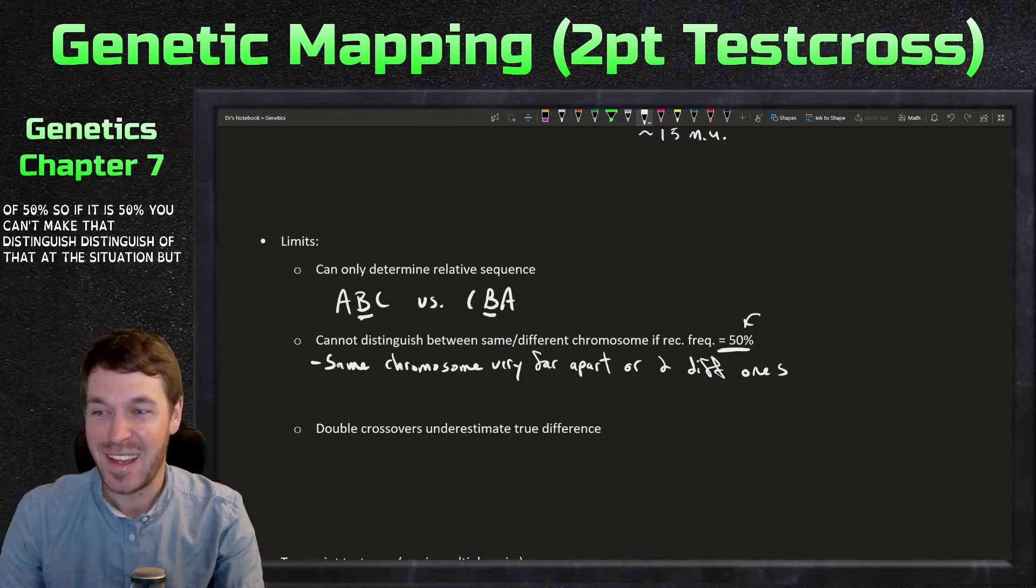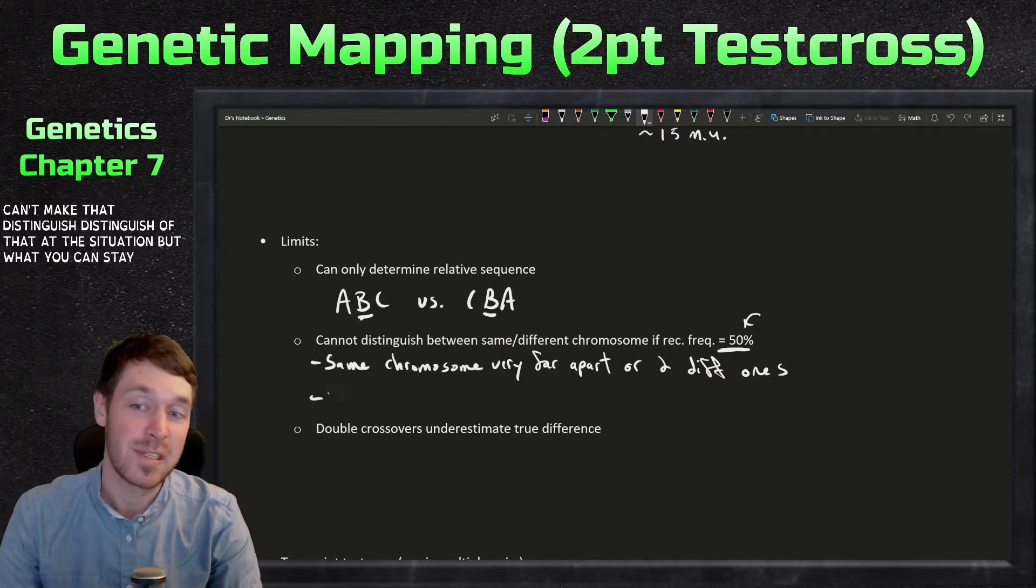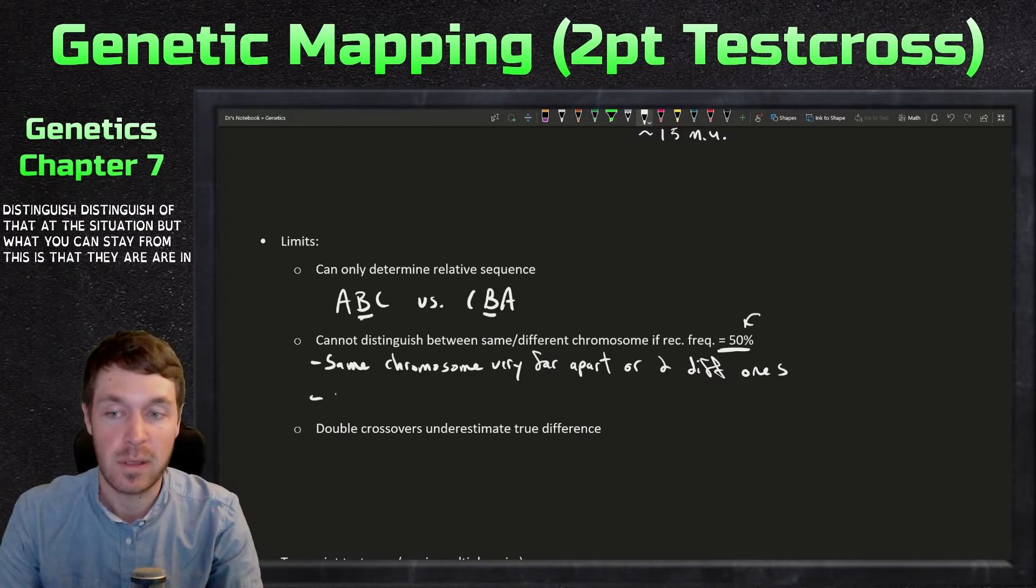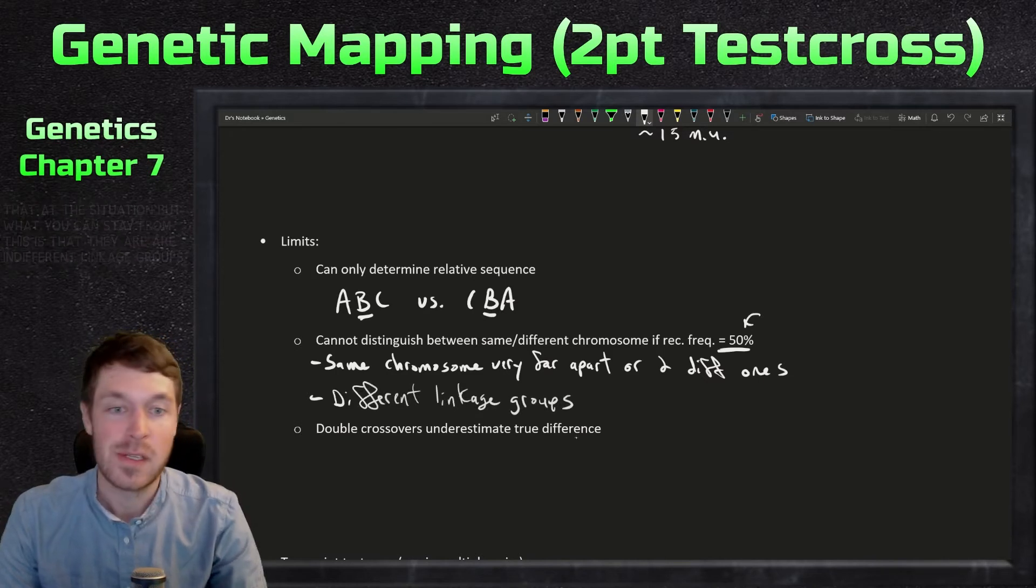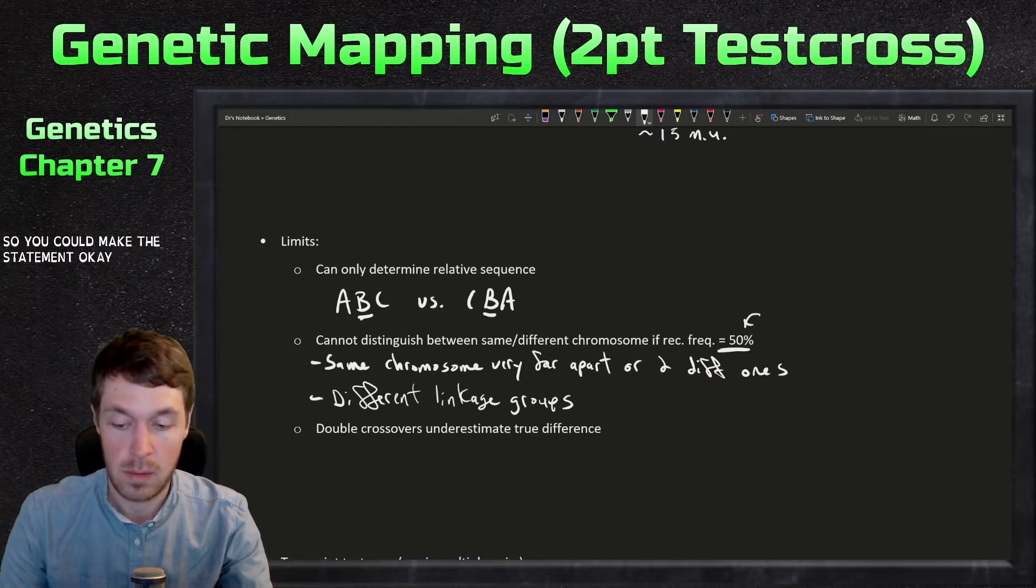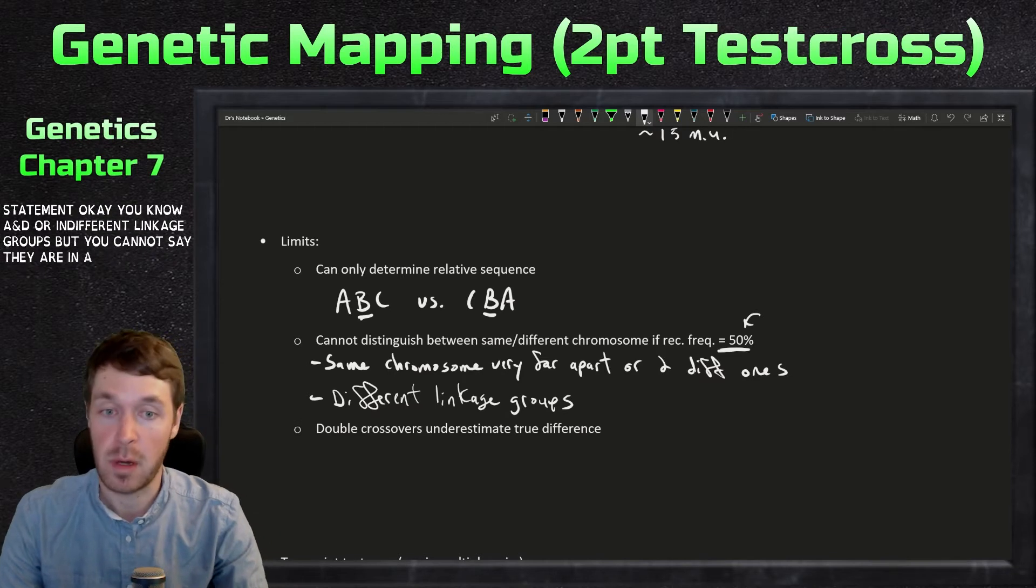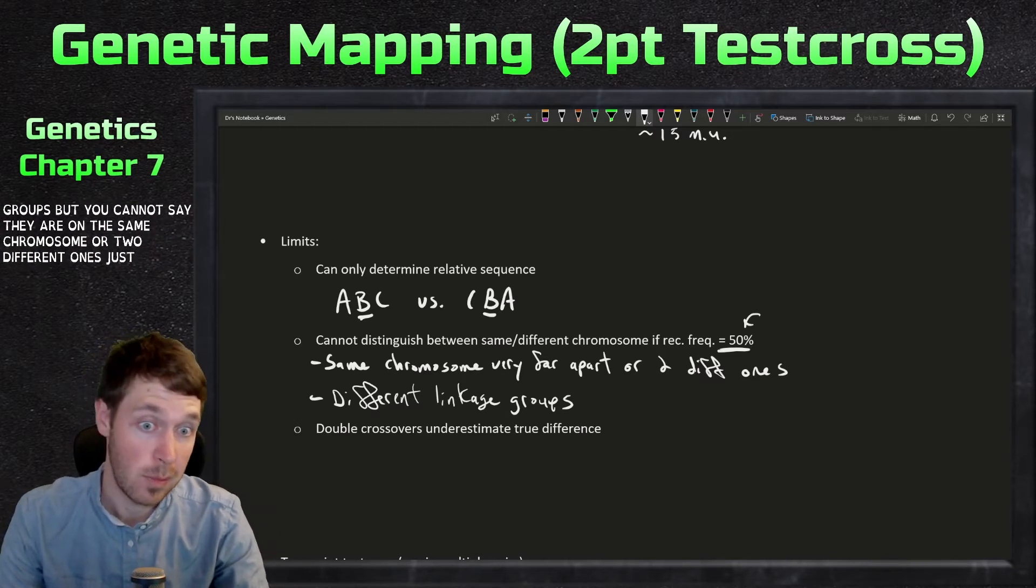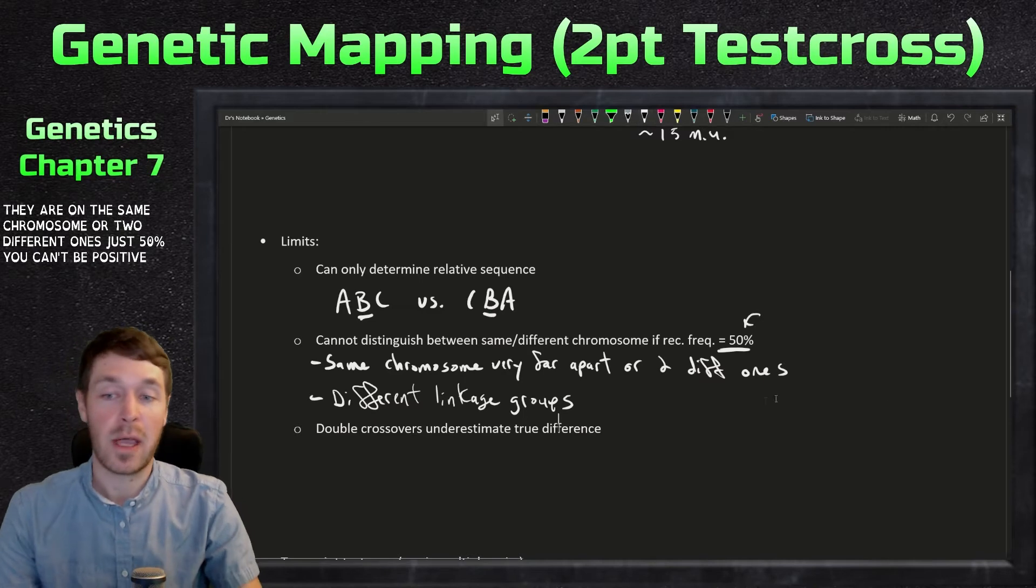But what you can state from this is that they are in different linkage groups. So you could make the statement, okay, A and D are in different linkage groups, but you cannot say they are in the same chromosome or two different ones, just 50%. You can't be positive.